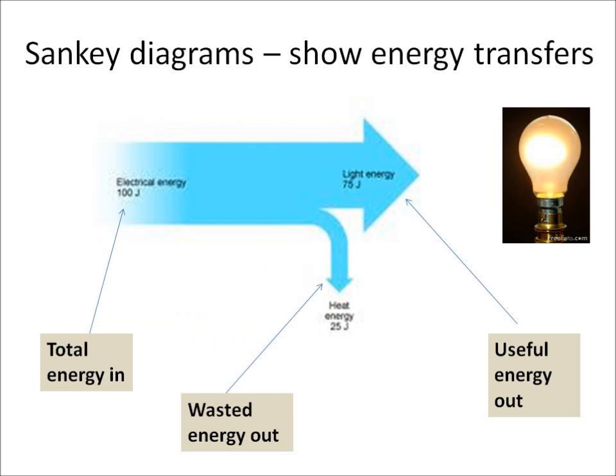We can use diagrams to show energy transfers. One type of diagram is called a Sankey diagram. A Sankey diagram shows the total amount of energy going in, the useful energy coming out, and the wasted energy coming out. In this example, the energy going in is electrical energy into a bulb. The useful energy out is the light energy, and the wasted energy out is heat energy.